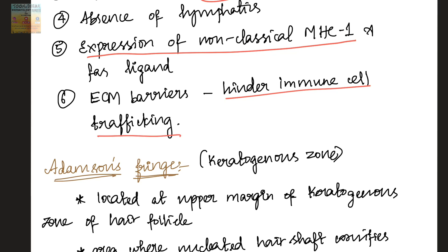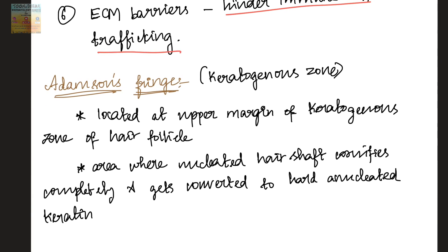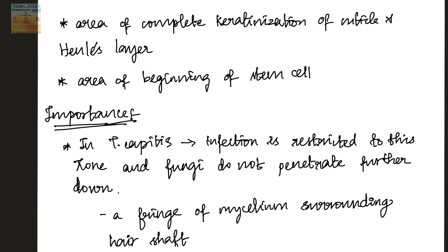Next are a few points about Adamson's fringe. Adamson's fringe is a keratogenous zone in the hair follicle. It is located at the upper margin of the keratogenous zone of the hair follicle, and it is the area where the nucleated hair shaft cornifies completely and gets converted to anucleated keratin. This area marks the area of complete keratinization of the cuticle and Henle's layer, and also marks the beginning of stem cells.